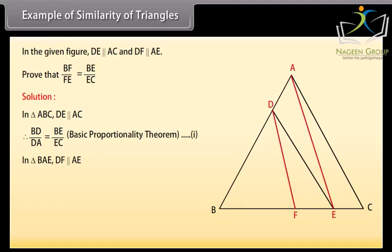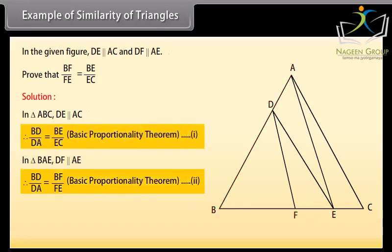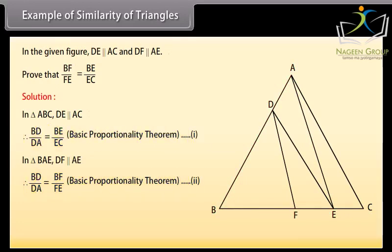In triangle BAE, DF is parallel to AE. Therefore, BD upon DA equals BF upon FE by the basic proportionality theorem — mark it as equation 2. From equations 1 and 2, we obtain BE upon EC equals BF upon FE.